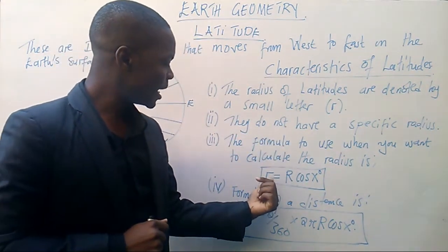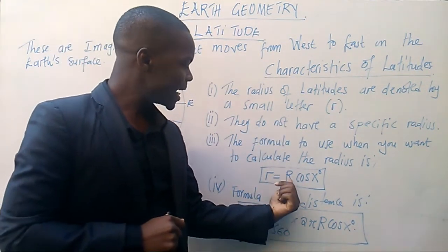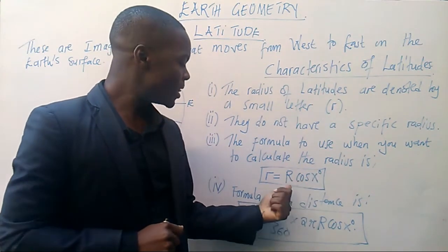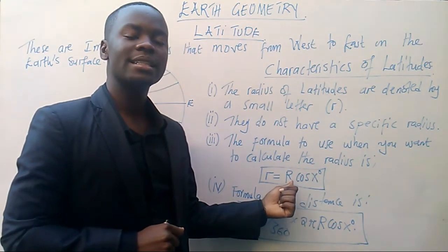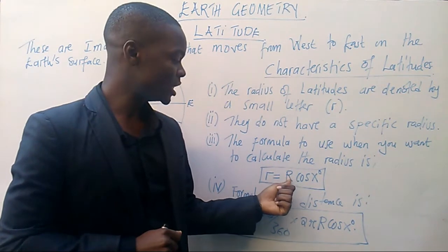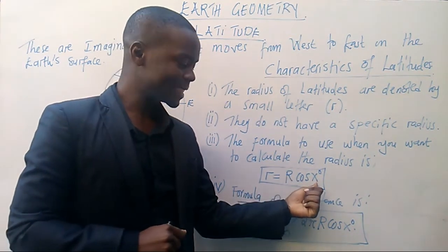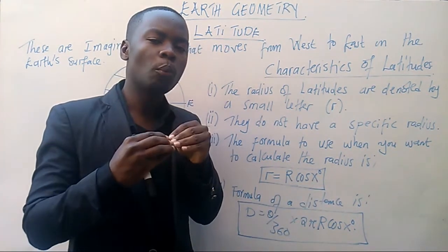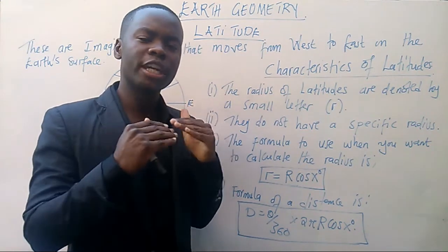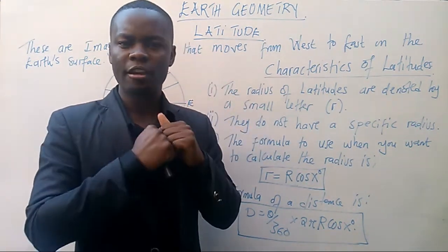The formula to use is r equals R cos x degrees, where this R is the radius in longitude, where this x is the angle or the line at which the given points lie.